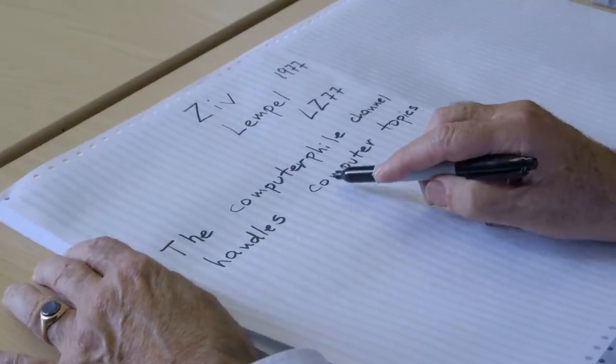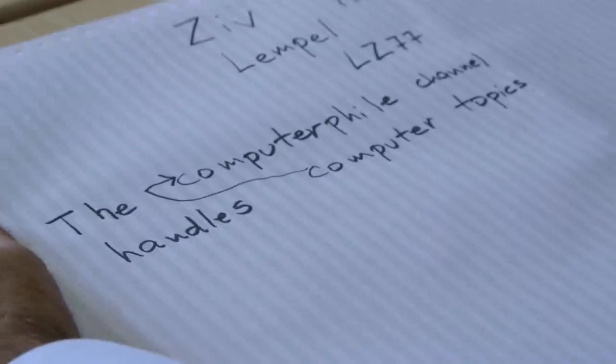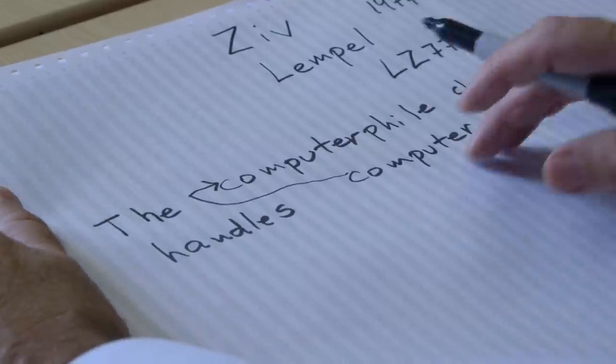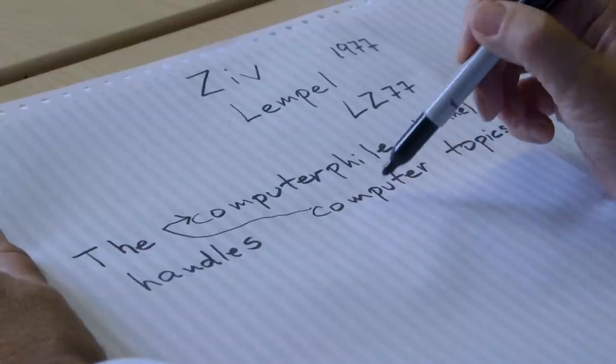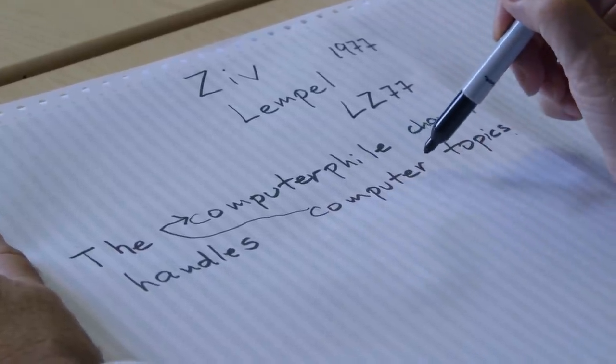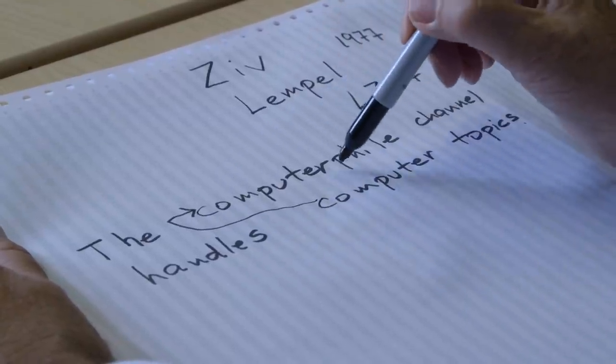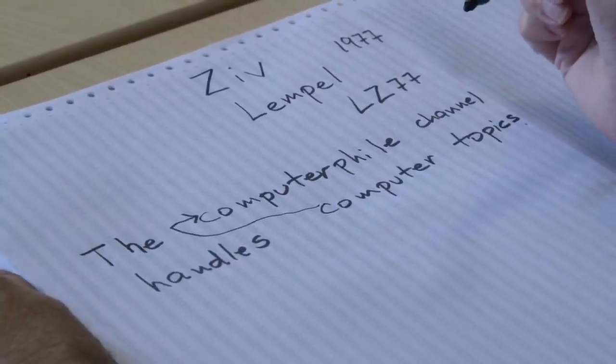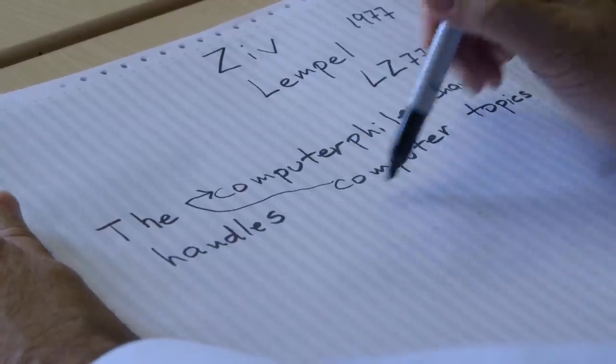Here we've got the word computer, eight characters. The compressor could remember that it has seen that string of characters already as a subset of the string Computerphile. The thought immediately occurs, eight characters are identical here to what they are at the beginning of that word. Can't we use that in some way and cut down the length of this?